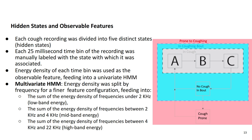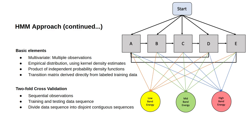Each cough recording was divided into five distinct states — the phases of the cough as distinguished by theory: states covering the three cough phases, a state of no coughing but within a bout, and a state where someone might be cough-prone but there is no coughing occurring. We divided time into 25-millisecond bins and assessed the acoustic energy density of each bin. For the multivariate Hidden Markov Model, we considered three energy bands: below 2 kHz, 2 to 4 kHz, and above 4 kHz, yielding three frequency bands per 25-millisecond time slot.